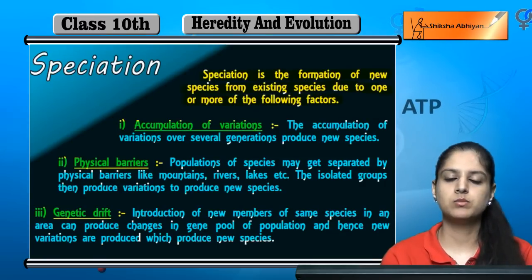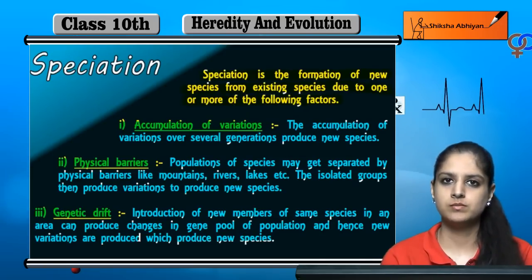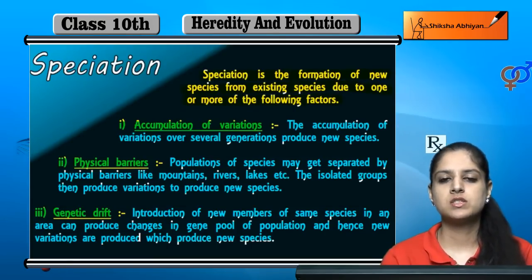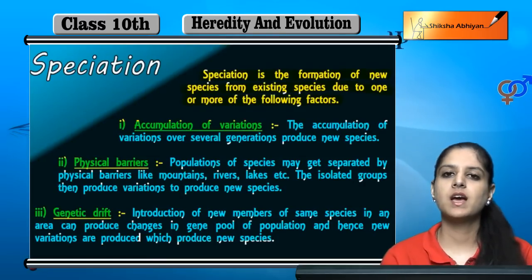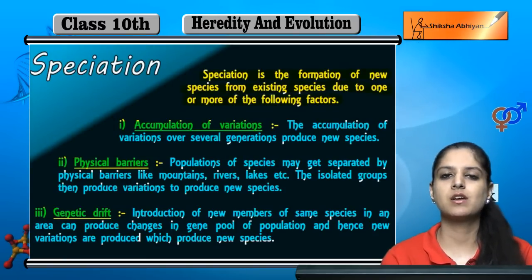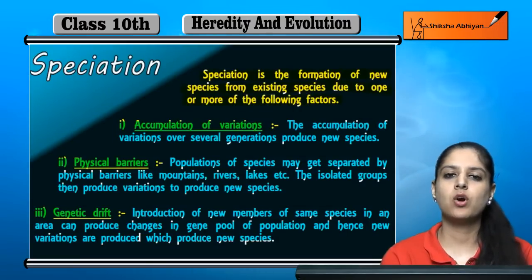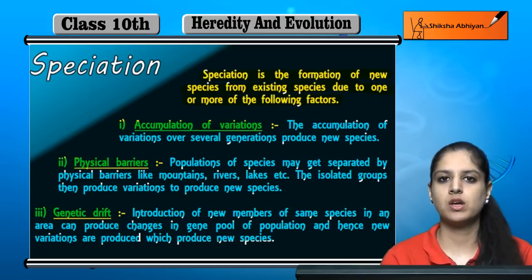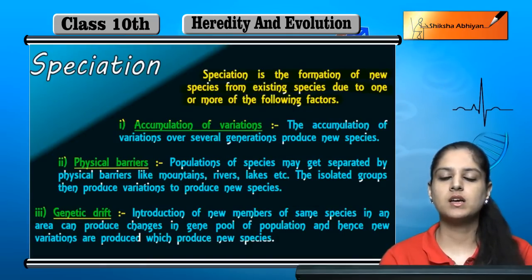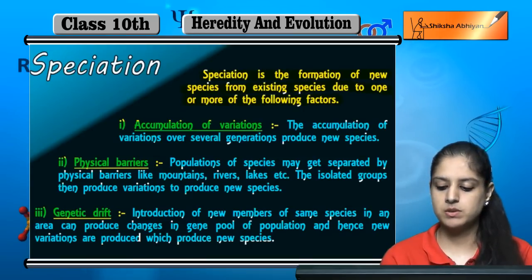Genetic drift means that genetically, if a new member appears in an area within a population where all members are the same, that new member carries some variation. For example, if 100 organisms are the same and one organism has different traits, because of that different organism, many hybrids will be created, producing new species.